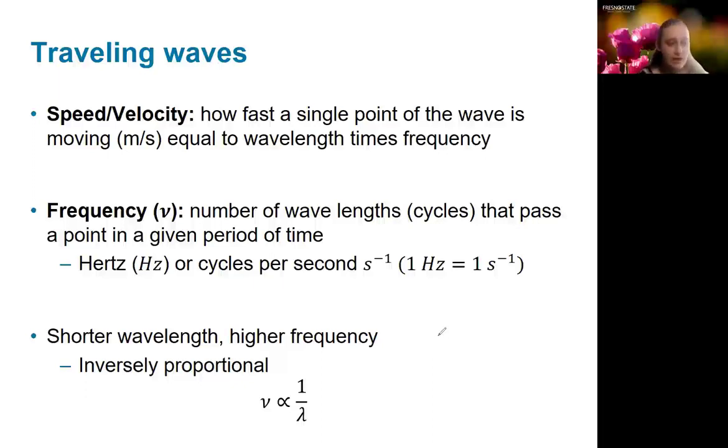Since the speed of a wave, which I'm going to call S, is equal to its frequency times the wavelength, we can say that for any two waves traveling at the same speed, as the frequency gets larger, the wavelength is going to have to get smaller, or vice versa, because they're going to be inversely proportional.